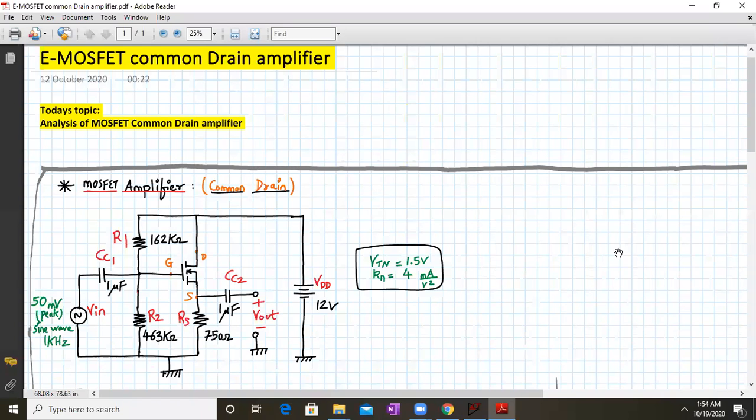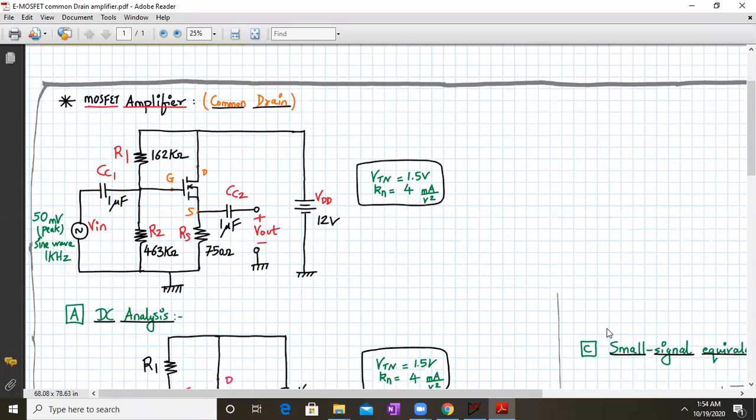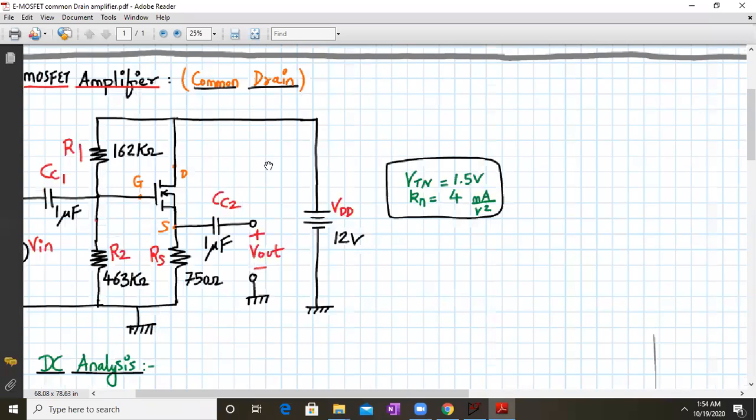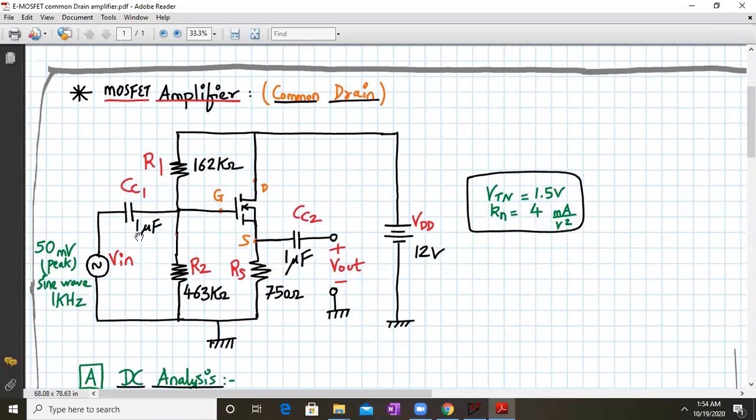Hello everyone, today we're going to discuss the MOSFET common drain amplifier. In this configuration, the input is applied to the gate terminal via coupling capacitor CC1, and the output is taken from the source terminal via coupling capacitor CC2. There is no drain resistor - the drain terminal is directly connected to the DC power supply.